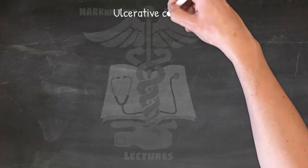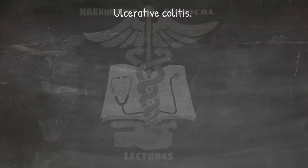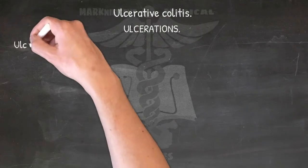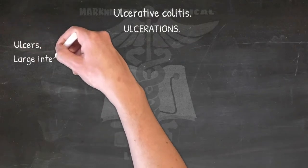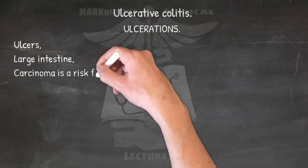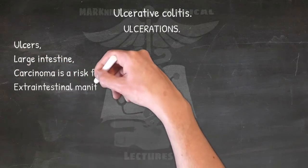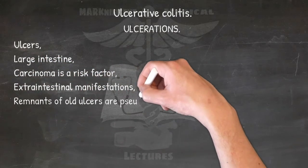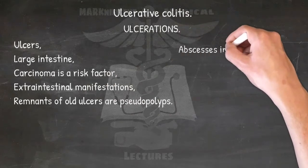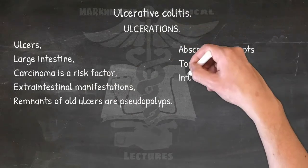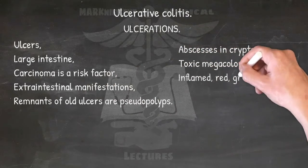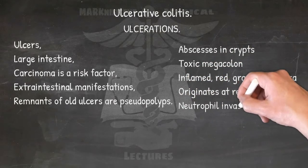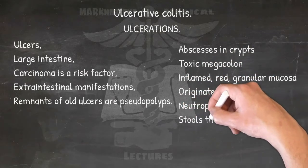Features of ulcerative colitis: ULCERATIONS — Ulcers, Large intestine, Carcinoma is a risk factor, Extraintestinal manifestations, Remnants of old ulcers are pseudopolyps, Abscesses in crypts, Toxic megacolon, Inflamed red granular mucosa, Originates at rectum, Neutrophil invasion, and Stools that are bloody.